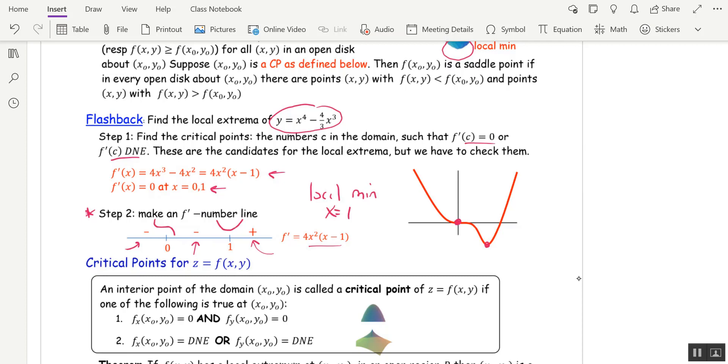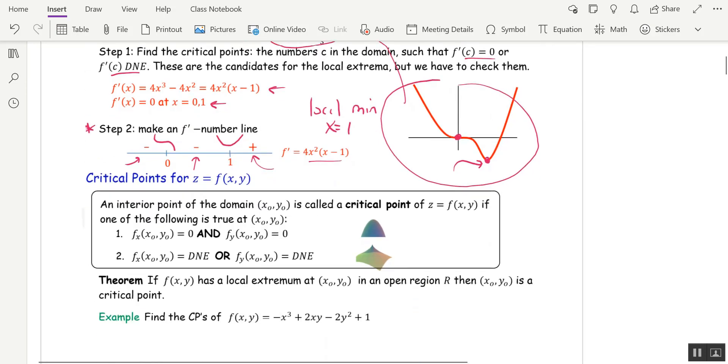So I have a local min at x equal 1. And I have a graph of that function over here. And you can see, indeed, we have a local min at x equal 1. To find the y-coordinate, you have to plug x equal 1 back into the original function up here to get y. Now let's look at two variables.